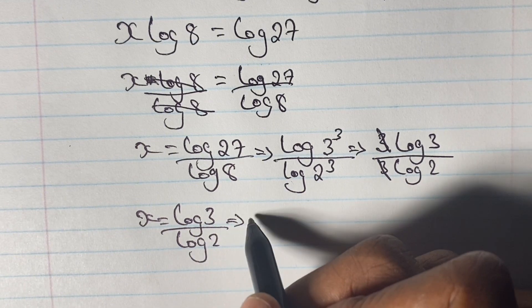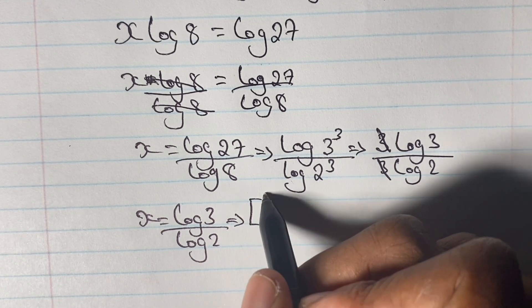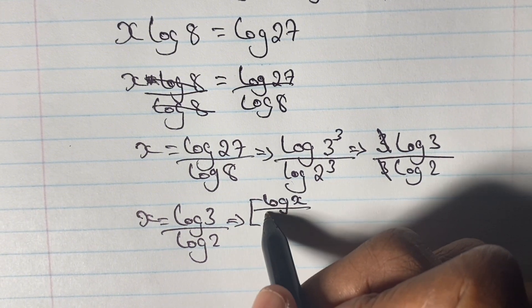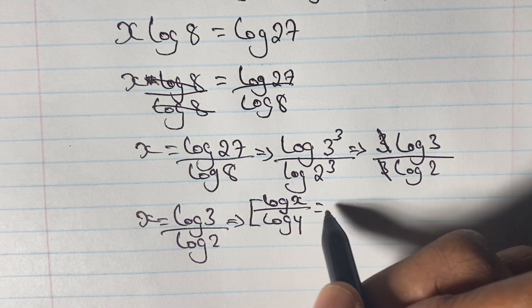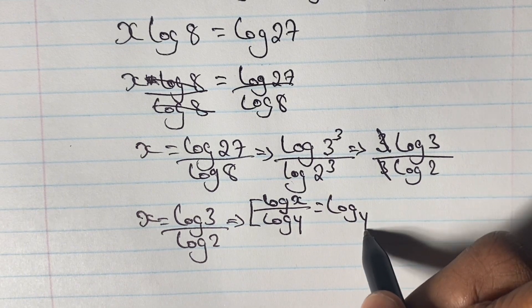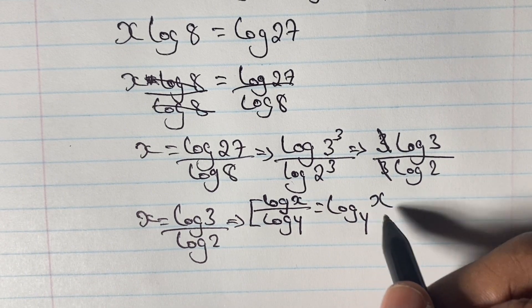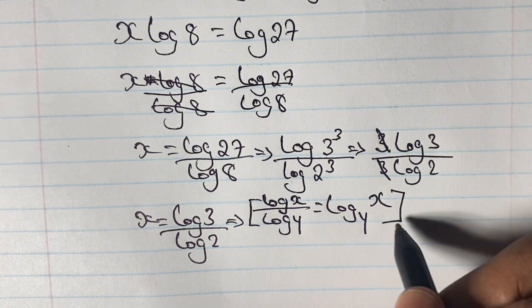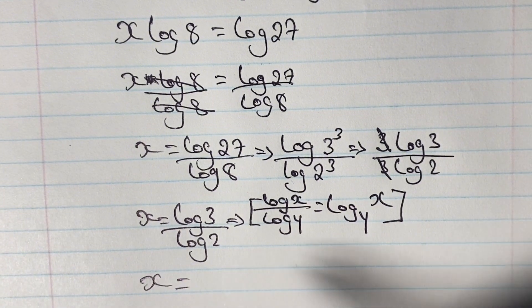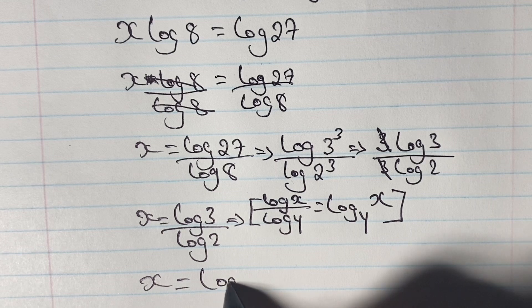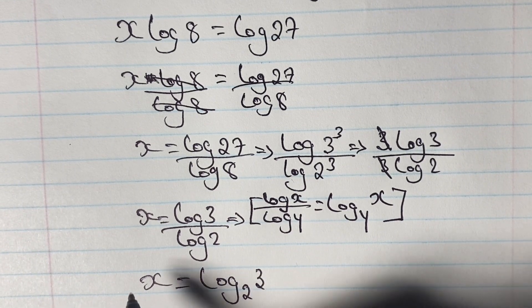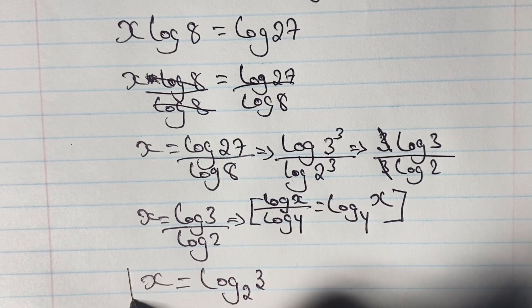We can simplify our answer further using the change of base rule, where log x over log y is equal to log base y of x. So x is equal to log base 2 of 3.